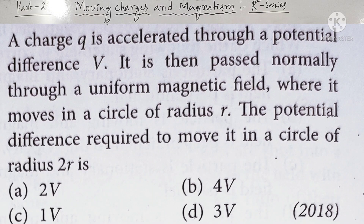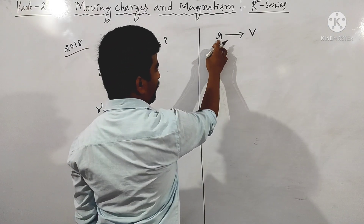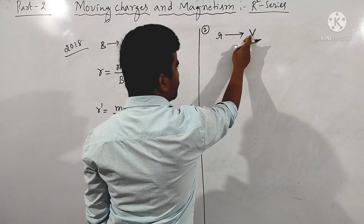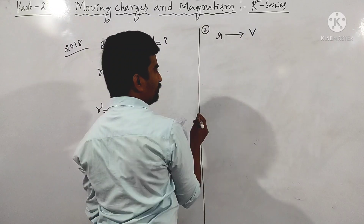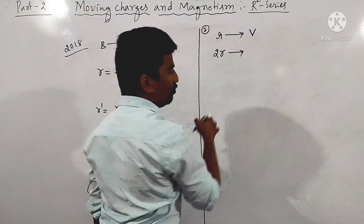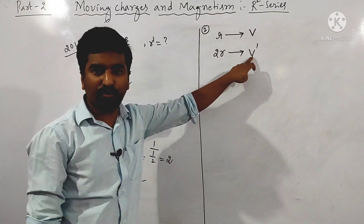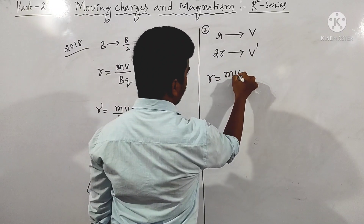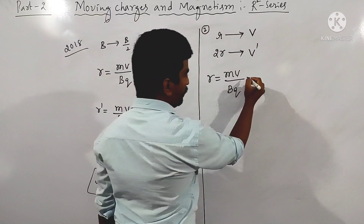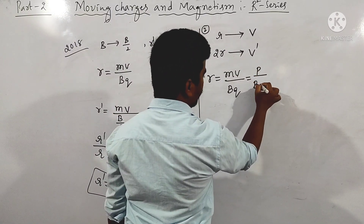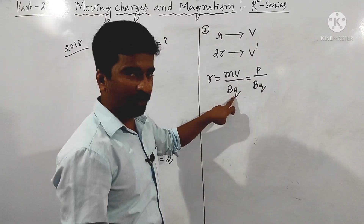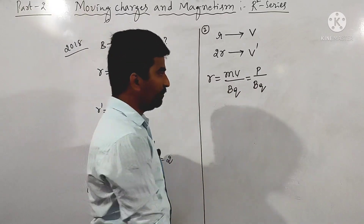Next question from 2018: a charge q is accelerated through a potential difference V, then passed normally through a uniform magnetic field where it moves in a circle of radius r. What potential difference is required to move in a circle of radius 2r? The radius formula is r equals mv divided by Bq, and mv is momentum p, so r equals p divided by Bq.